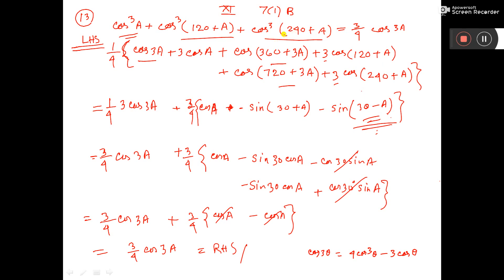This is theta. Here also cos 3 theta, 3 into this, plus 3 cos theta — theta is this. Now see, 3 cos theta: this will also come 3 cos theta, and this will also come 3 cos theta. How will it come? 4 into 90 plus 3A — so it will come in the first quadrant. Cos will be cos 3A. And this one also, 8 into 90 plus 3A — this will also come in the first quadrant. Cos will be cos 3A. So, total 3 cos 3A will come, and this is here.